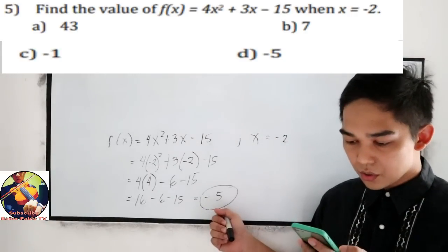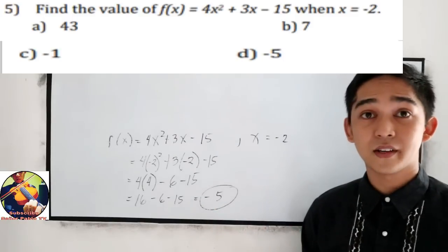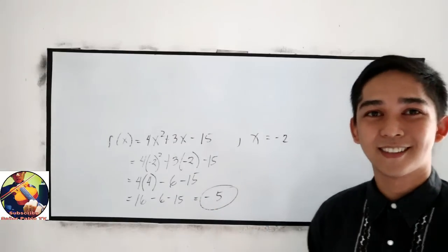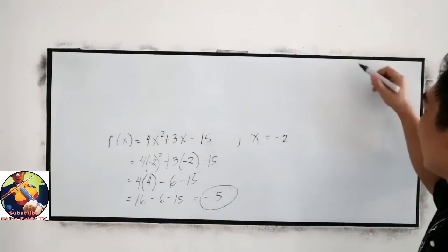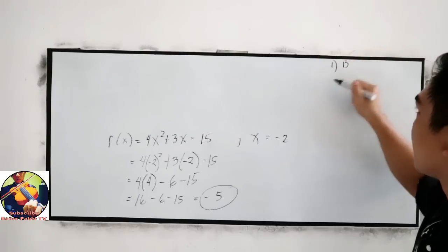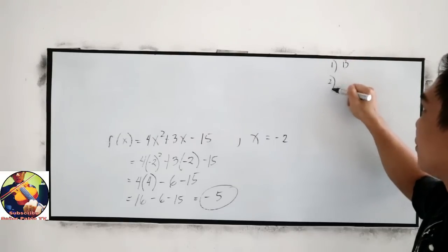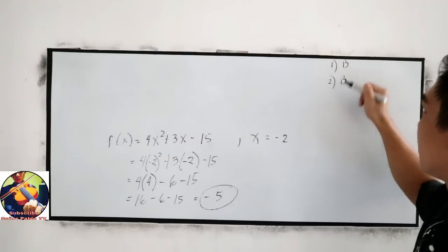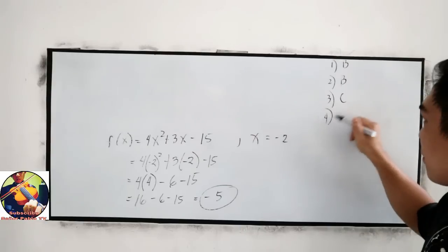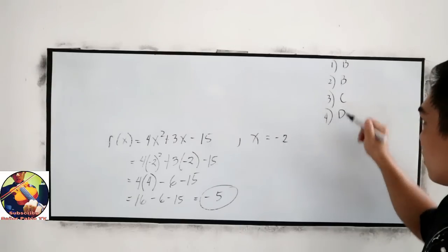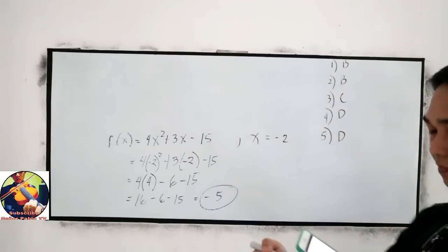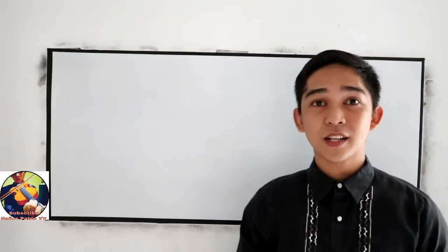So that is letter D. Let us write our answers: number 1 is B, number 2 is B, number 3 is C, number 4 is D, number 5 is D. Now let's proceed to number 6.